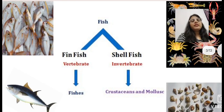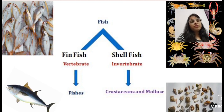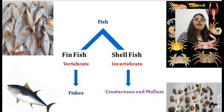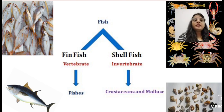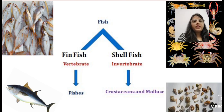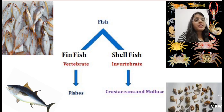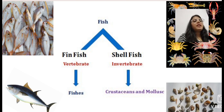According to aquaculture, fishes are categorized into two categories: finfish and shellfish. Finfishes are true fishes and are vertebrate animals like catfish, shark, etc. But shellfishes are not true fishes. These are invertebrate animals like crustaceans and mollusks.